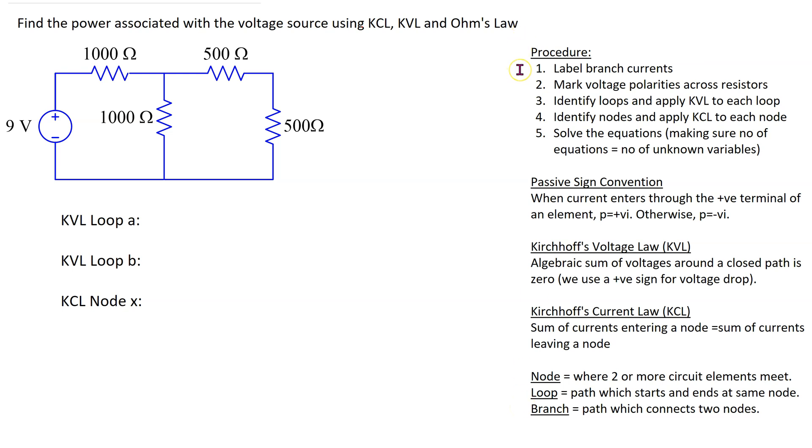So let's get started. The first step is to label branch currents. In this given circuit the 9V DC source and this resistor are in series. Therefore we can label this current and call it I1. We can label the current in this branch I2. And finally the two 500 Ohm resistors are again in series so they carry the same current. And we can label the current in this branch as I3.